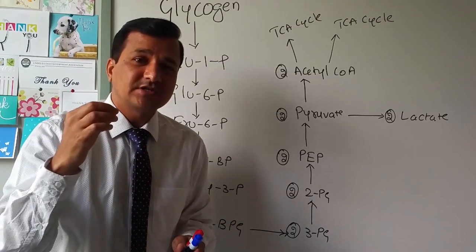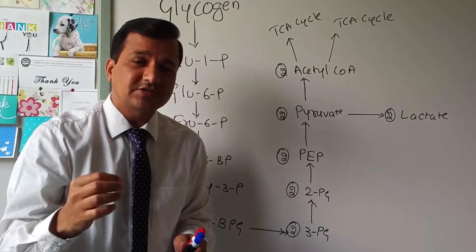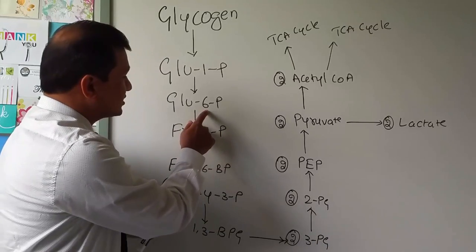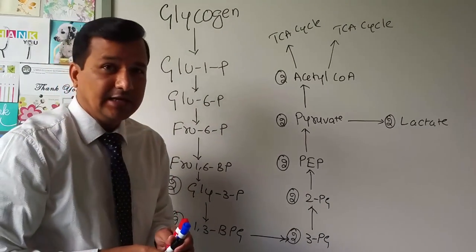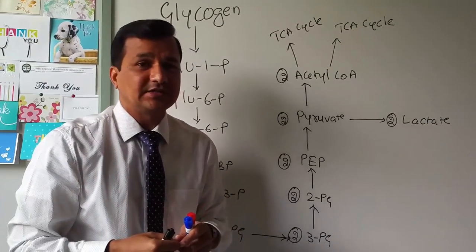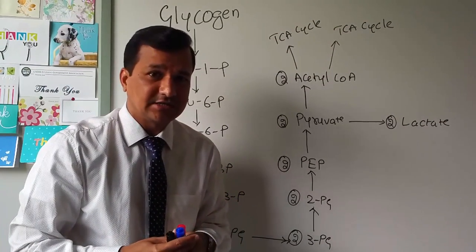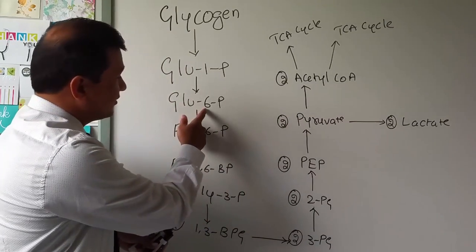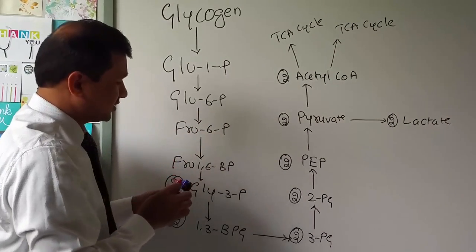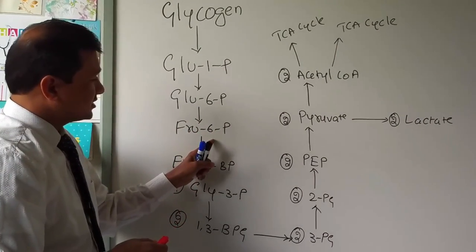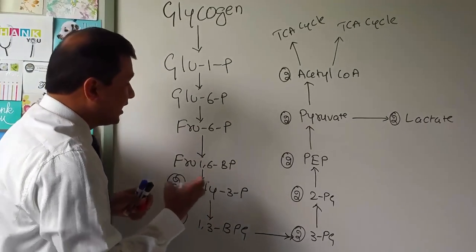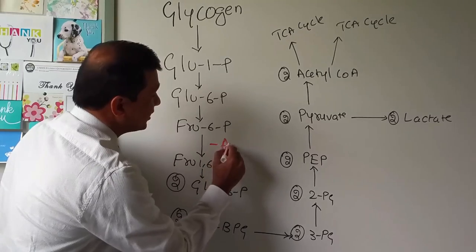Note that to convert glucose-1-phosphate into glucose-6-phosphate or fructose-6-phosphate, we have not spent any ATP, unlike in glycolysis where converting glucose to glucose-6-phosphate costs one ATP. Here, glycogen degradation incorporates inorganic phosphate via glycogen phosphorylase, placing the phosphate at the sixth position of glucose. Fructose-6-phosphate is then converted to fructose-1,6-bisphosphate, consuming 1 ATP at this step.